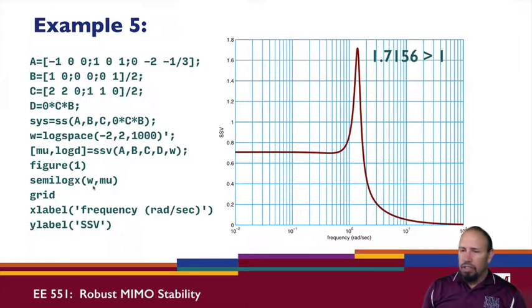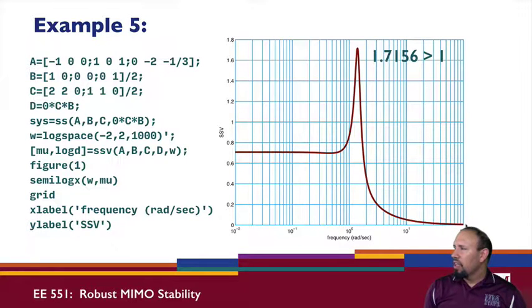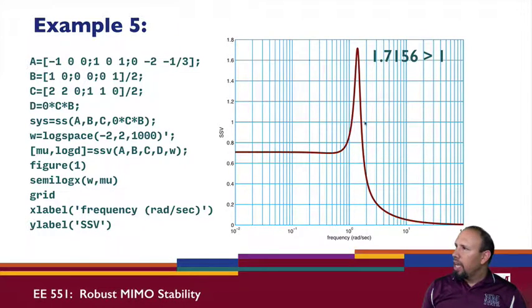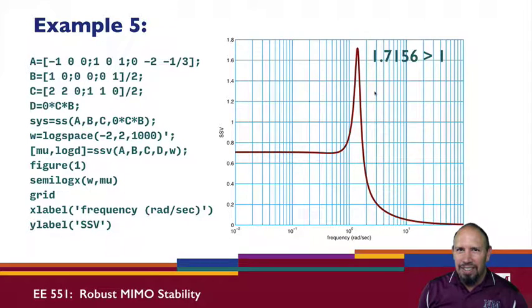The 'ssv' command doesn't return a plot automatically, so we plot the result using 'semilogx' — the frequency axis is logarithmic because the frequency range spans from 10^-2 to 10^2, which would compress badly on a linear scale. Looking at the structured singular value plot, the maximum magnitude is approximately 1.7 — strictly greater than one — which tells us the system is not robustly stable. These are practical tools for analyzing robust stability.